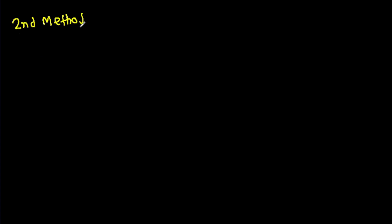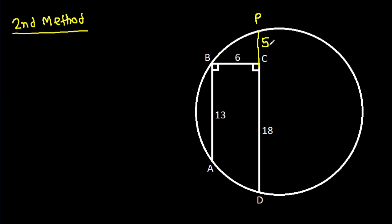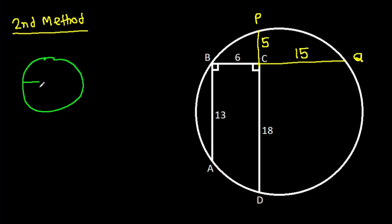Now for the second method. We know that PC is 5 and QC is 15. In any circle, if two chords intersect at a point O, then using the intersecting chords property with points A, B and C, D intersecting at right angle.